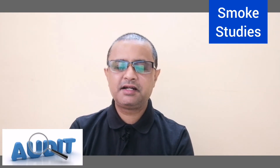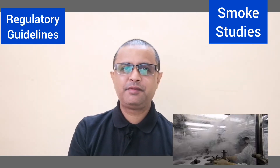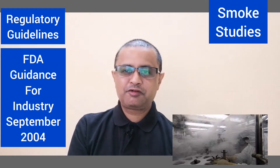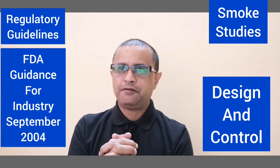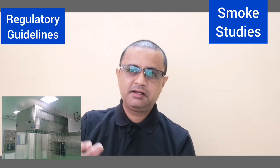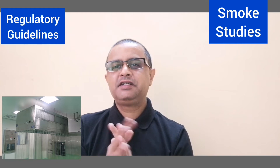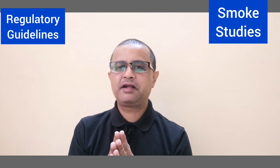The second question about smoke study is: what are the regulatory guidelines? FDA Guidance for Industry, September 2004 states that proper design and control prevents turbulence and stagnant air in the critical area. Once relevant parameters are established — such as air flow, air velocity, and particulate counts — it is crucial that the air flow pattern should be evaluated for turbulence or eddy currents. This is the requirement as per the September 2004 Guidance for Industry.